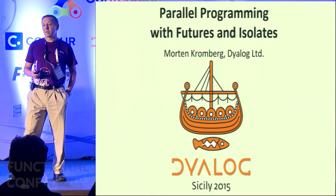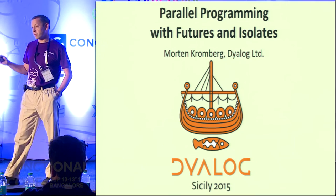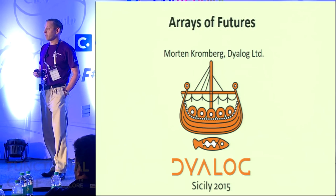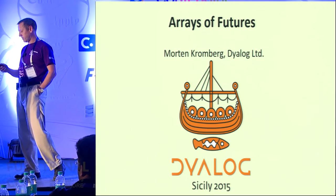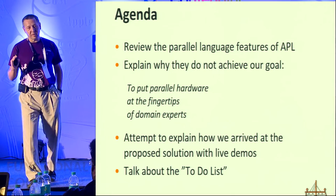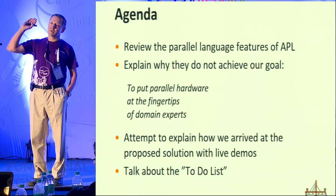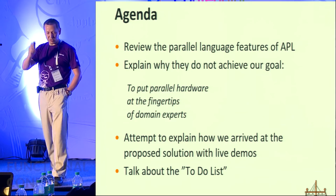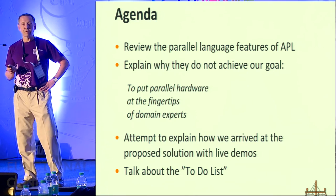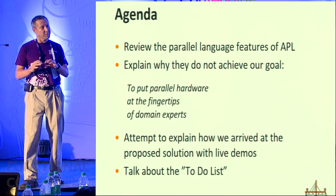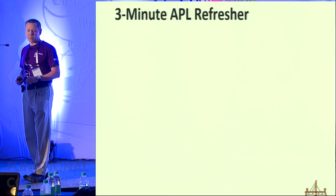I'm going to tell you a little bit about some features we've just added to DialogAPL about a year ago. They're not very dissimilar to features in other languages like Clojure, but the difference in flavor is probably that we have arrays of these things, because as APL programmers we see everything as arrays. I'll spend a few minutes just showing you APL, then explain why existing parallel features don't really allow us to achieve the goal of putting parallel hardware at the fingertips of domain expert users.